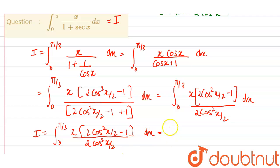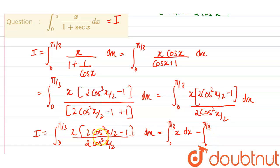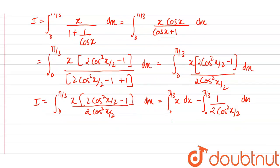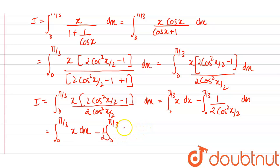We are splitting into different parts. From 0 to π/3, when we separate this, it is integral of x dx minus integral from 0 to π/3. The 1/2 terms cancel, so it can be rewritten as x times 1 divided by 2cos²(x/2) dx. So it is integral from 0 to π/3 of x dx minus integral from 0 to π/3, taking 1/2 as constant common.